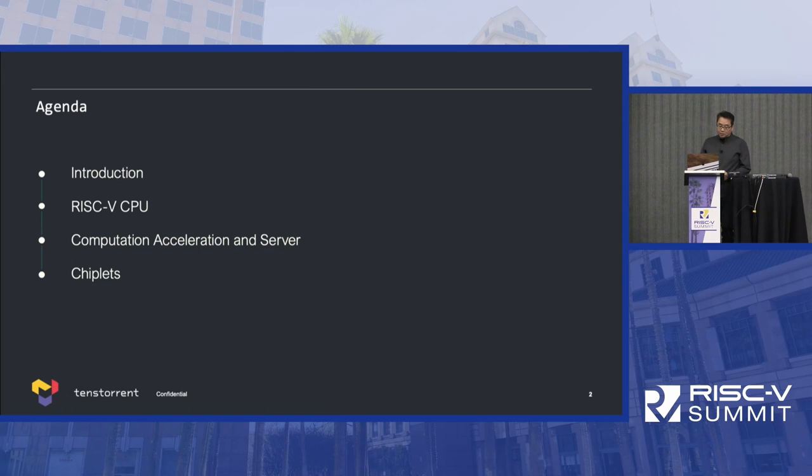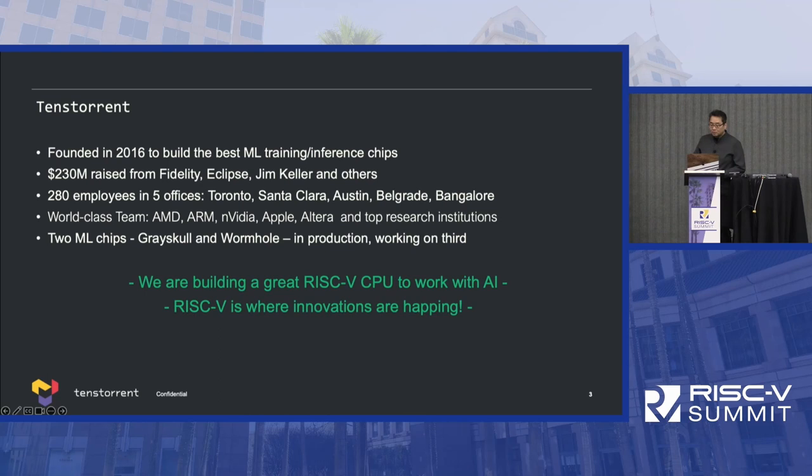TenStory was founded in 2016 with a mission to build the best machine learning training and inference chips. We've raised $230 million so far, with 280 employees. It's still quite small for the projects we're working on, across five different offices: Toronto, Santa Clara, Austin, Belgrade, and Bangalore.